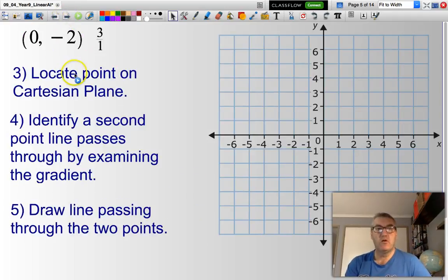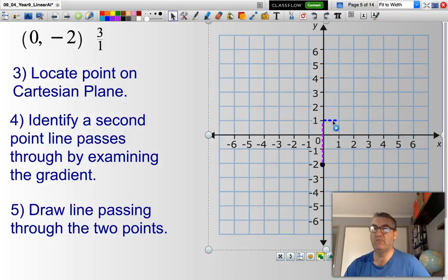You would then locate the starting point on the Cartesian plane. Then you would look for a second point that the line would go through. In this situation, we would have to go up 3 and across 1. So, we would go up 3, across 1, and we would have a second point that our line would go through.